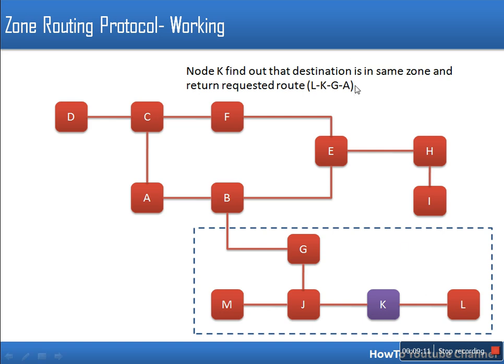K sends the route reply with the path L, K, G, A. This works because whenever a node initiates a route query packet it attaches its IP address to the packet, and all intermediate nodes receiving that packet also attach their IP address. So when the packet is received, the destination can find out the full route from the sender to the destination.